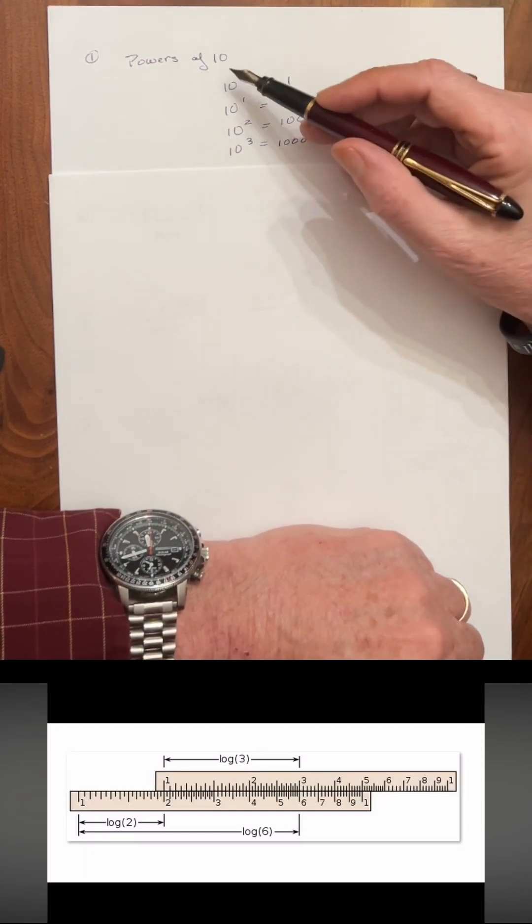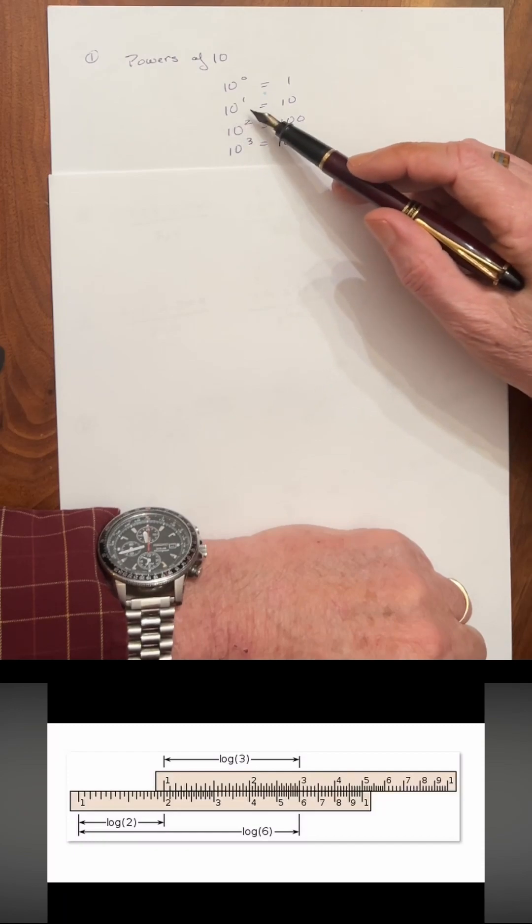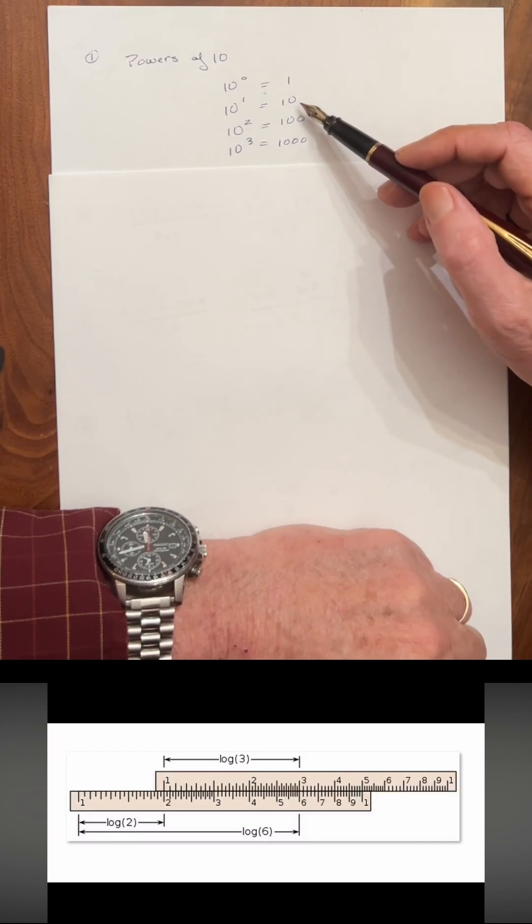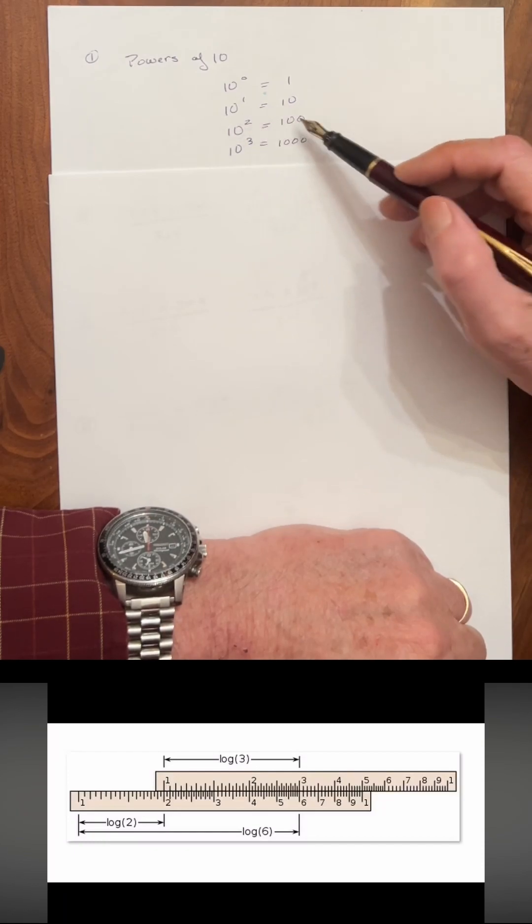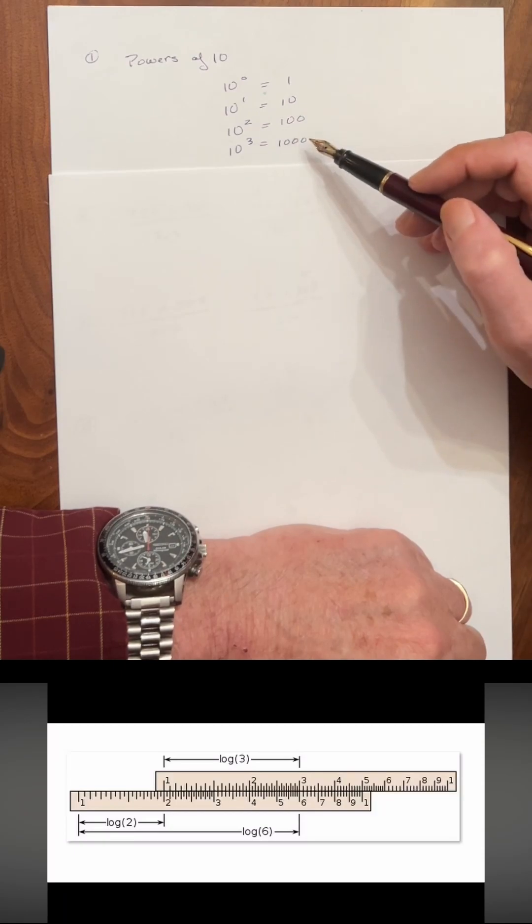A couple basic concepts. The powers of 10. If you multiply something by 10 to the 1, you're multiplying it by 10. Likewise, 10 to the 2, you multiply by 100. 10 to the 3, 1000.